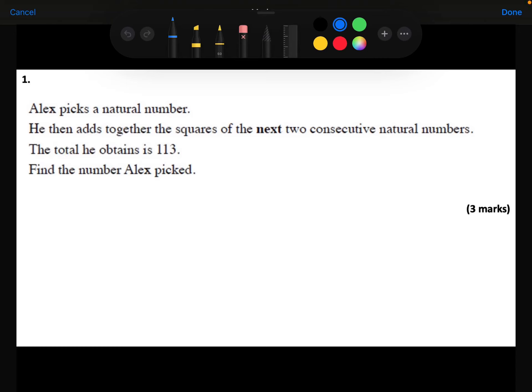Alex picks a natural number, that just means a whole positive number. He then adds together the squares of the next two consecutive natural numbers. The total he obtains is 113. Find the number Alex picks.